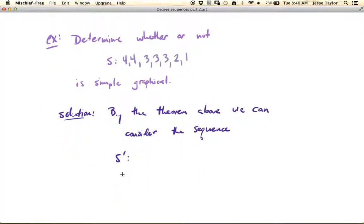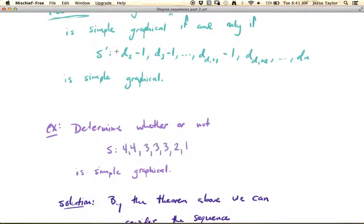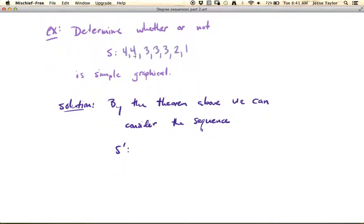So we want to determine whether or not 4, 4, 3, 3, 3, 2, 1 is simple graphical. Using the above theorem, we can consider a simpler sequence. We're supposed to drop the first term — so we're dropping the four — and then in the next four terms, subtract one. For the rest of the terms, we just leave them alone. So we're going to drop the first four, and then subtract one from each of the next four numbers.